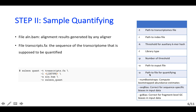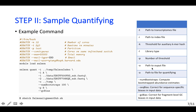Here, A indicates the path to the file for quantifying, and O is the path to the output file. This is the details about the batch file that could be run on the clusters. The p indicates the number of threads. You could also set the number of bootstraps to help you compute bootstrapped abundance estimates. You could also set the sequence bias flag to correct for sequence-specific biases in input data, and set the gcBias command to correct for fragment-level GC biases in input data.